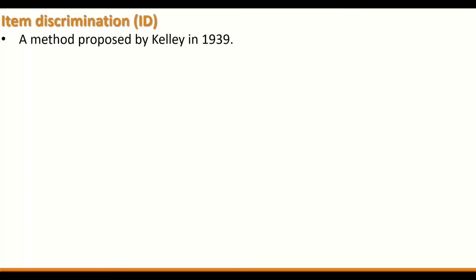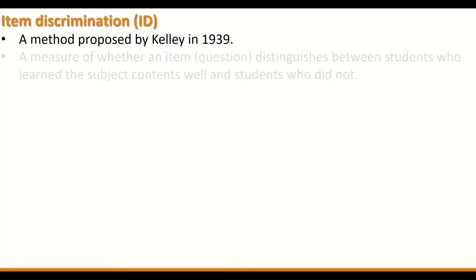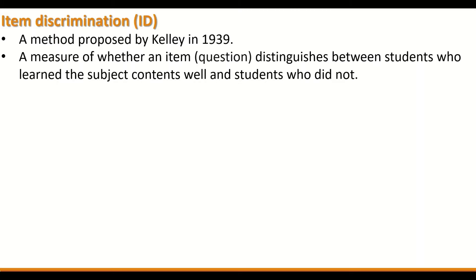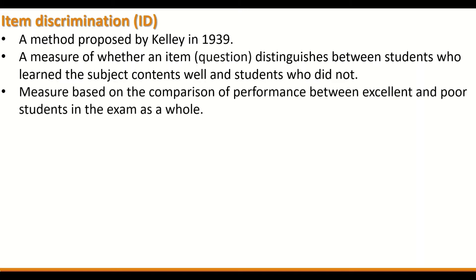Item discrimination, abbreviated ID, is a method proposed by Kelly in 1939. It is a measure of whether an item — a question in this case — distinguishes between students who learned the subject content well and students who did not. The measure is based on the comparison of performance between excellent and poor students in the exam as a whole.